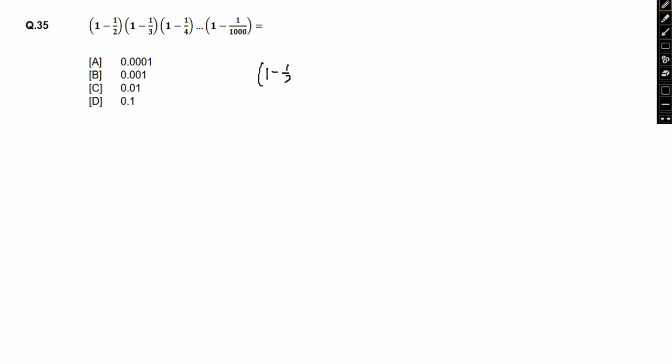1 minus 1 by 2, 1 minus 1 by 3, 1 minus 1 by 4 and so on till 1 minus 1 by 999 and 1 minus 1 by 1000. Okay, so this is what we have.